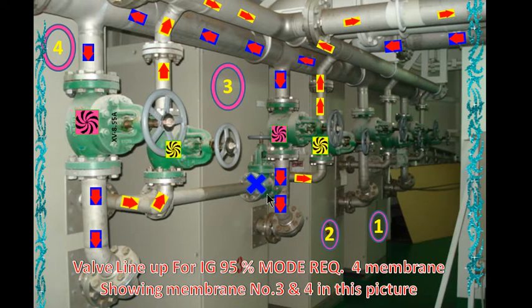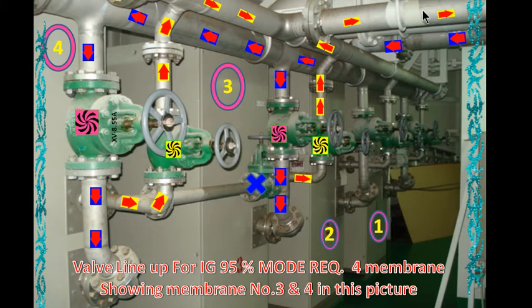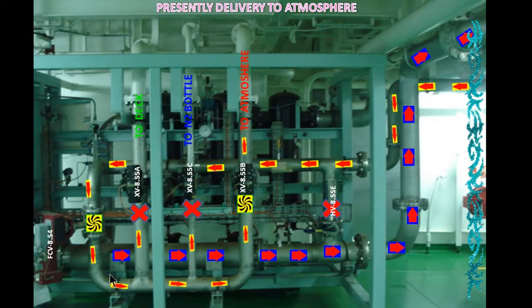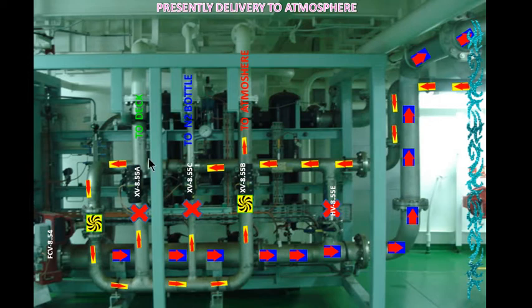Similarly, the air coming here goes out in a similar manner in the common line. The air coming from the membrane, these walls are open, and it can go to the deck, to the N2 bottle, or to the atmosphere. Right now it's going to the atmosphere. It all depends on whether the chief officer wants it for the deck, N2 bottle, or atmosphere.